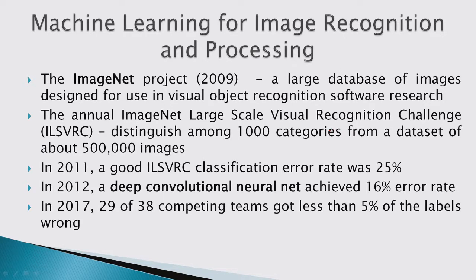When you have a problem like this, you can think about ways to approach it. One way would be to use domain knowledge to understand what makes cameras different — like differences in sensors or lenses. But none of the winners seem to have taken that approach. Right now for images, pretty much everyone uses deep learning and convolutional neural networks.